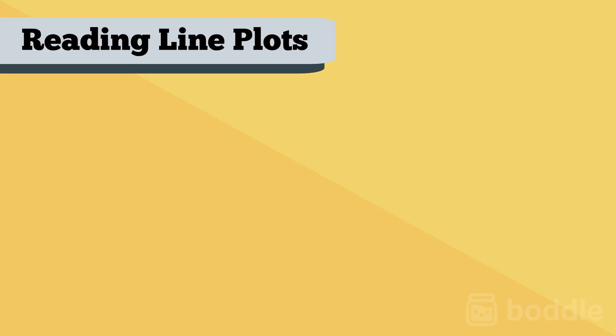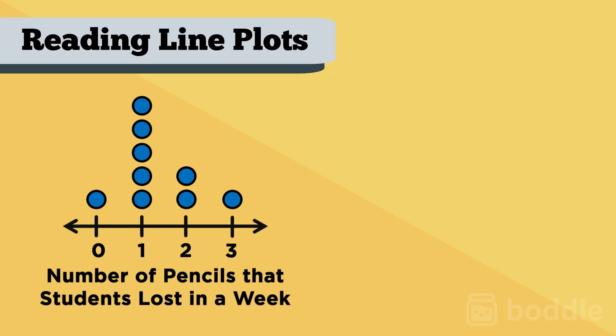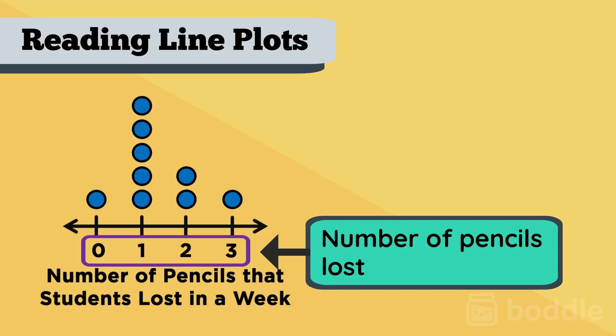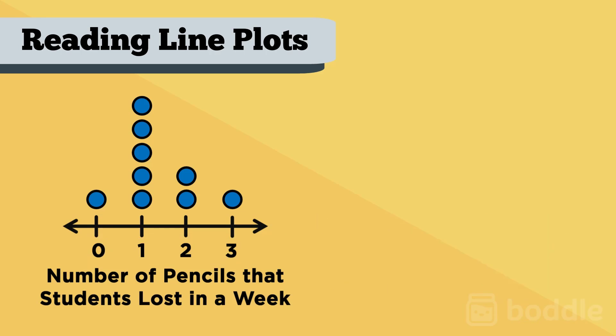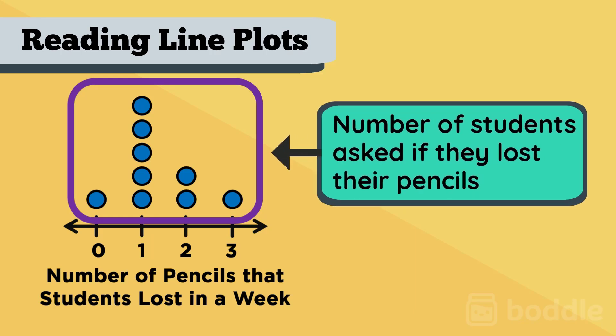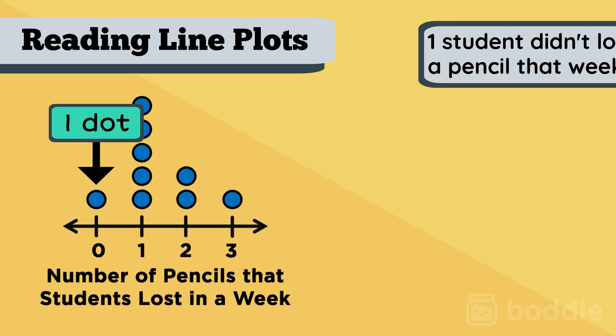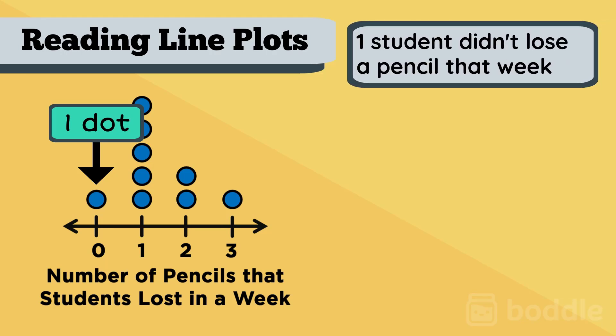Let's see how this works using an example. This is a line plot on the number of pencils lost by students in a week. The number below the line shows the number of pencils lost. The dots above the line represent the students that were asked if they lost their pencils. There is one dot above zero, meaning one student didn't lose any pencils that week.